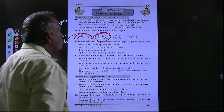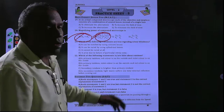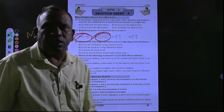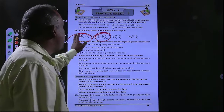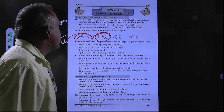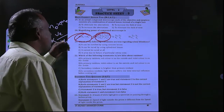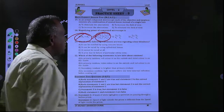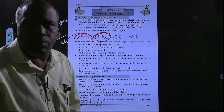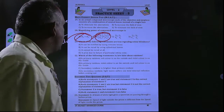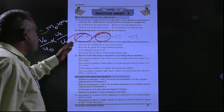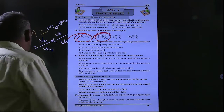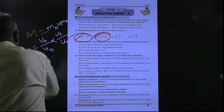The remaining two options are wrong. So A and B are the correct answers for question 20, same as the previous question. Next is the 21st question.